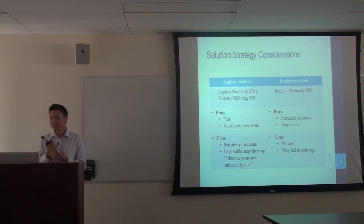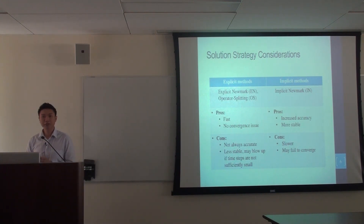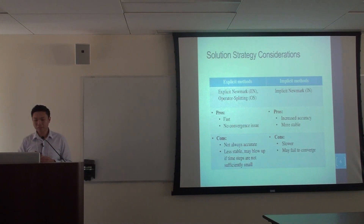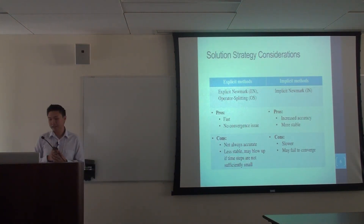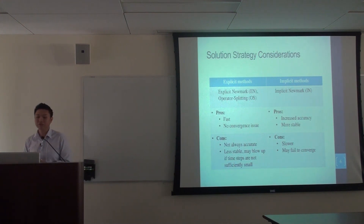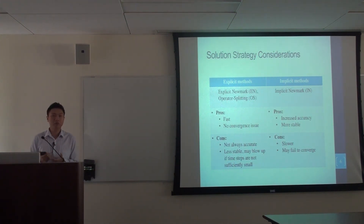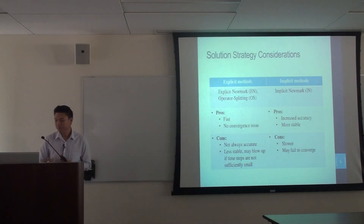On the other hand, the implicit methods, for example the implicit Newmark method, even though they're a little bit slower because they require iterations and as a result they may fail to converge, but they're relatively more accurate and more stable.